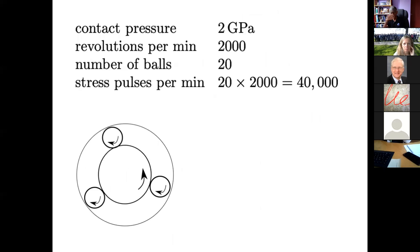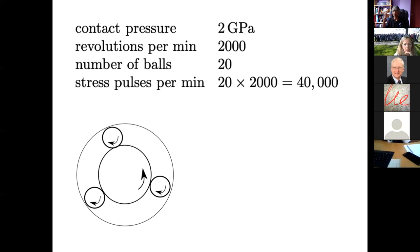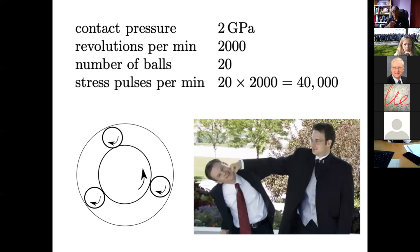Let's think about a typical bearing. The contact pressure between the rolling element and the raceway is of the order of 2 GPa. It might be rotating at 2,000 RPM, and let's assume there are 20 balls. Then there are about 40,000 stress pulses experienced at a point on the raceway during one minute. Imagine being punched 40,000 times per minute with a contact pressure of 2 GPa — and yet bearings serve reliably. Steel is just an amazing material.